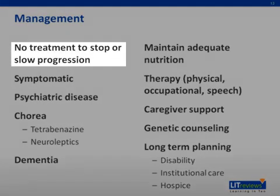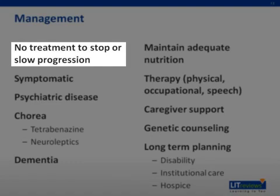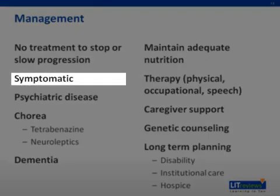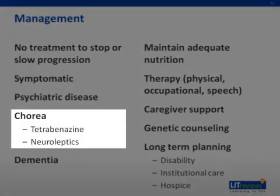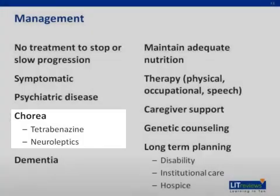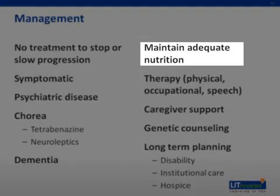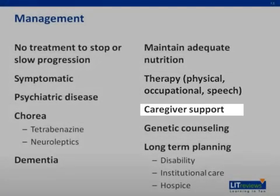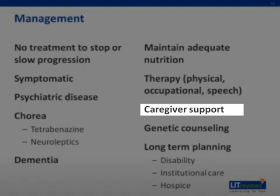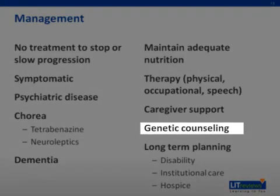Onto management. Unfortunately, despite numerous trials, no clear treatment in humans has been shown to stop or slow disease progression. There are several drugs on the horizon that in animal models have slowed progression and have promise for the future. For now, treatment is symptomatic. Treating psychiatric manifestations with appropriate medications, including SSRIs, will work well in patients with Huntington's. Chorea can be treated with either neuroleptics or tetrabenazine if severe. Other therapies include maintaining adequate nutrition with dysphagia screening, and appropriate therapy services including physical, occupational, and speech therapy. As the patient's condition progresses, offering caregiver support is important. Genetic counseling, if occurring prior to having children, and discussing the risk of passing down the mutation to each generation, must be considered.